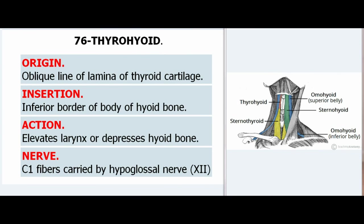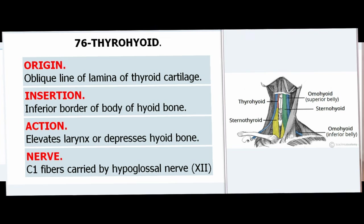76. Thyrohyoid. Origin: Oblique line of lamina of thyroid cartilage. Insertion: Inferior border of body of hyoid bone. Action: Elevates larynx or depresses hyoid bone. Nerve: C1 fibers carried by hypoglossal nerve (XII).